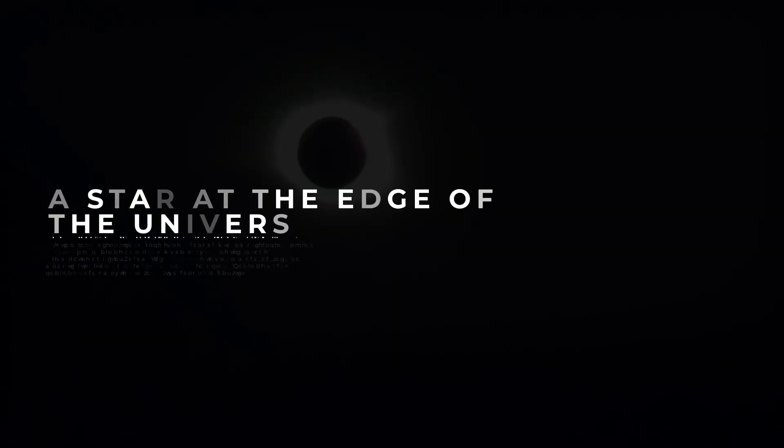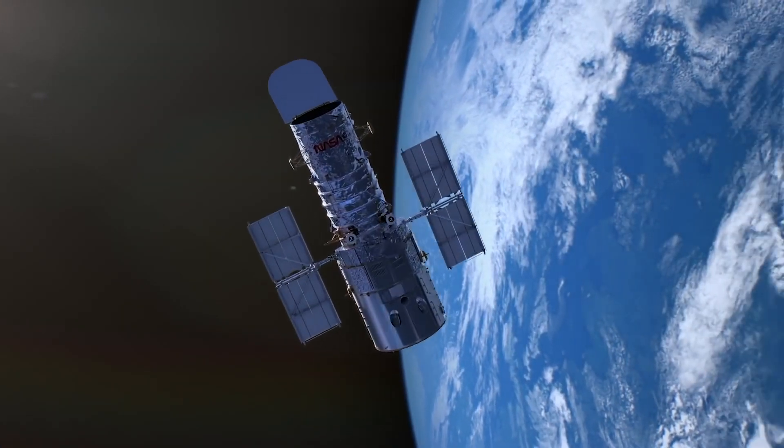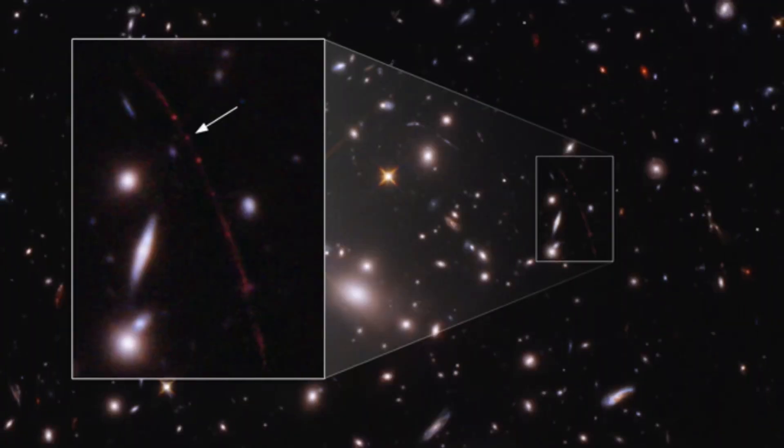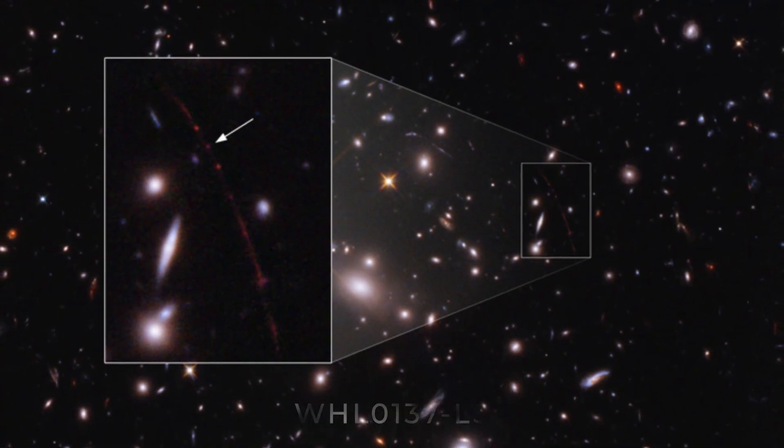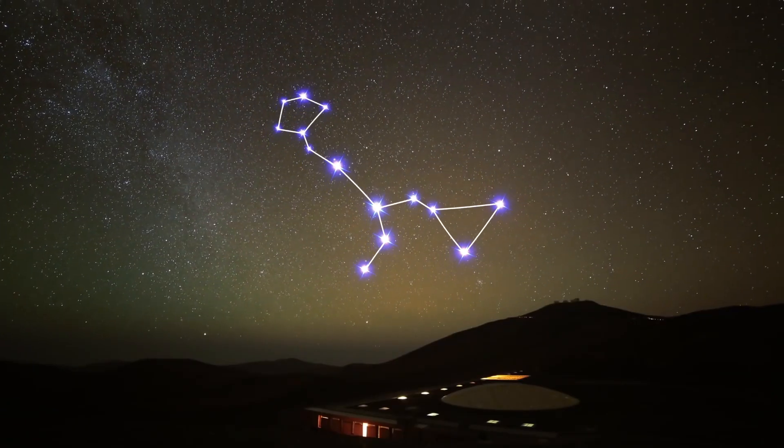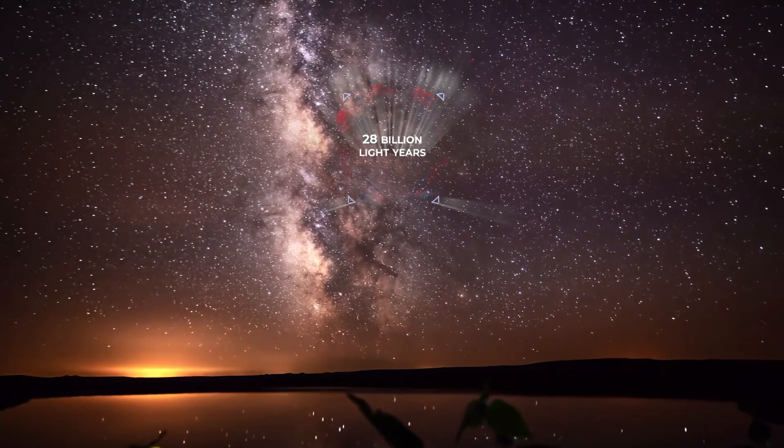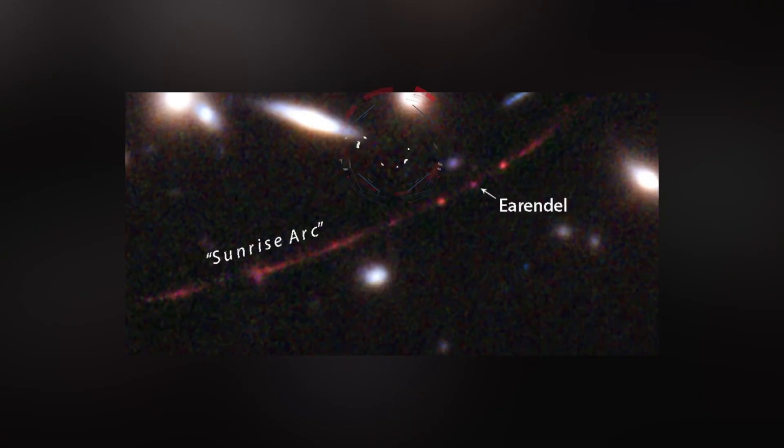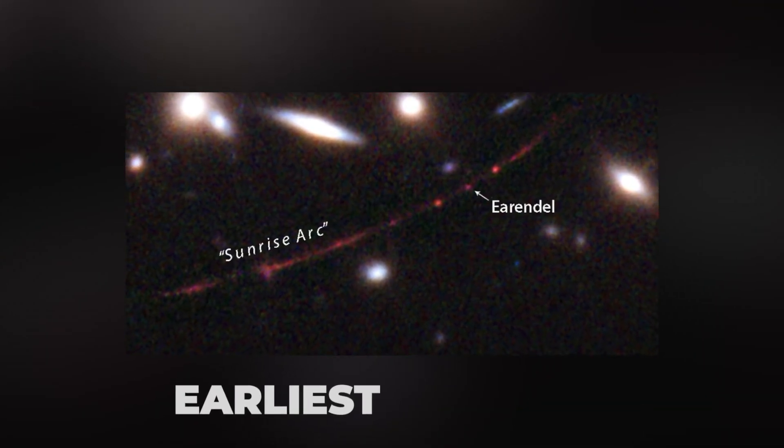Number 6. A Star at the Edge of the Universe. Earlier this year, the Hubble Space Telescope discovered the star WHL-0137LS, also called Earendel. This star sits inside the Cetus constellation at an insane distance of 28 billion light years away from Earth. This makes Earendel the earliest and most distant star ever discovered.